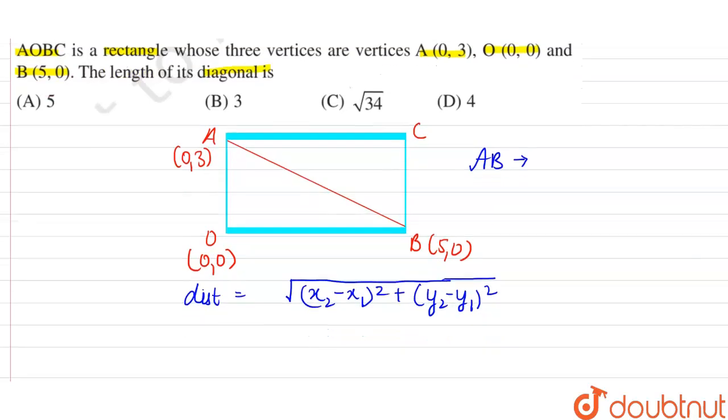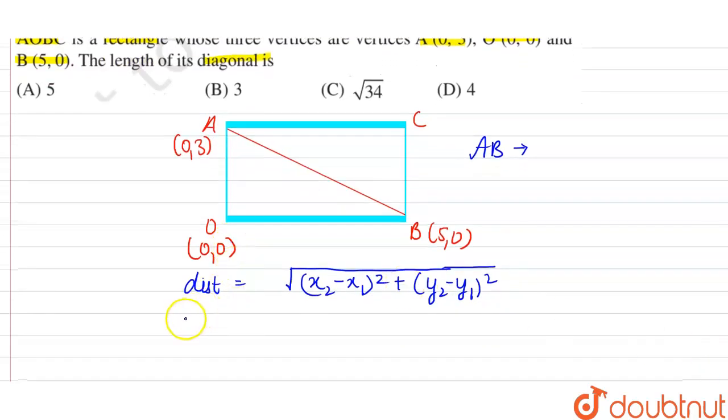So now here we have to find the distance between points A and B. So let's substitute the values of A and B, x and y, x1, x2, y1, and y2 in the given formula.